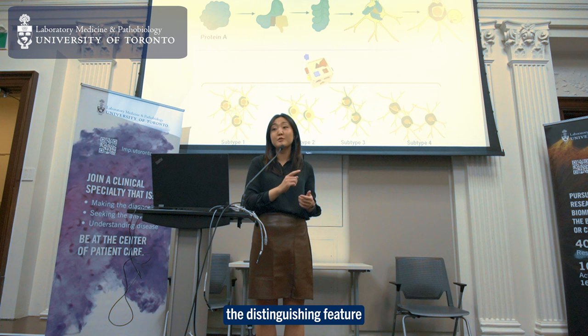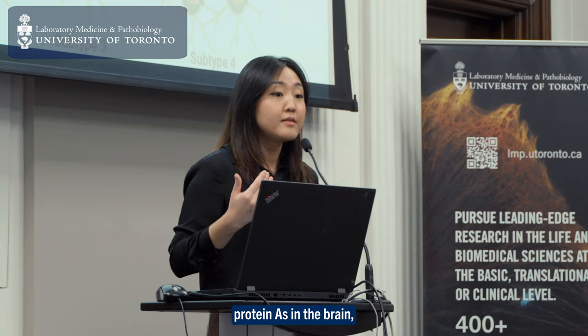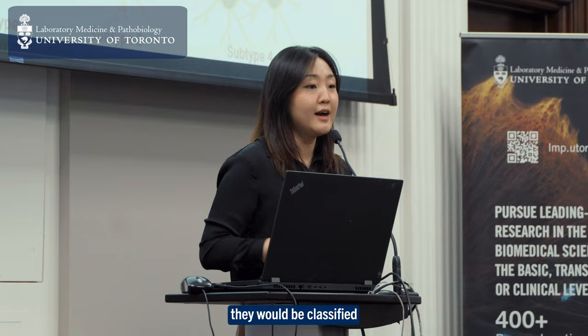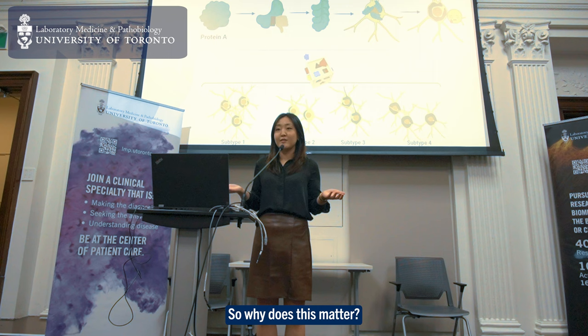Then, I will identify the distinguishing feature of each subtype. For example, if some patients have larger size and a rounder shape of the bad protein A's in the brain, they would be classified as subtype 3. And those in subtype 3 may particularly have a longer disease duration than others who are in a different subtype.